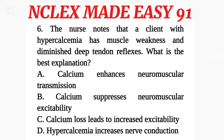Question 6. The nurse notes that a client with hypercalcemia has muscle weakness and diminished deep tendon reflexes. What is the best explanation? A. Calcium enhances neuromuscular transmission. B. Calcium suppresses neuromuscular excitability. C. Calcium loss leads to increased excitability. D. Hypercalcemia increases nerve conduction.